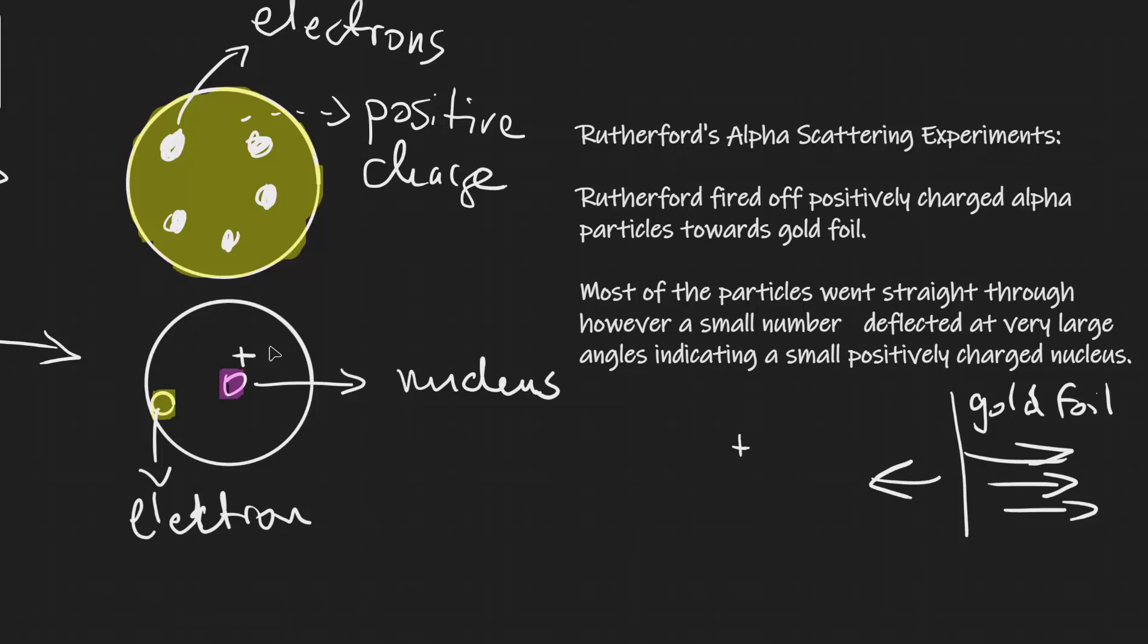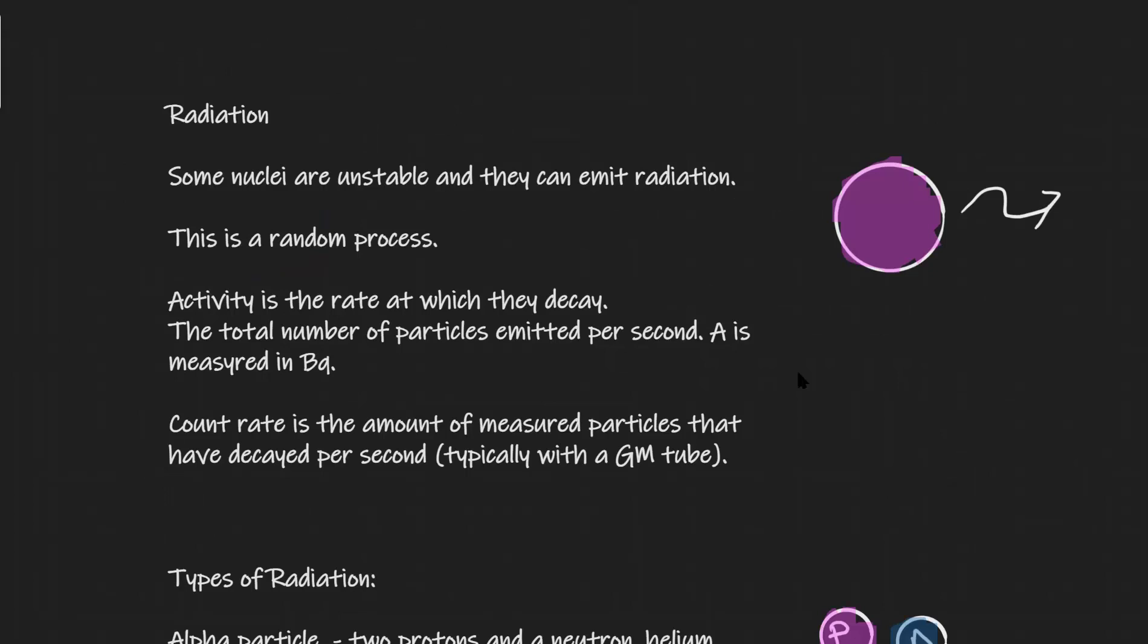Now let's talk about radiation. So some nuclei are actually unstable and what happens is that they can emit radiation. This is a completely random process. Random means that we cannot actually force it. We cannot just produce radiation. We describe it using a quantity which is known as the activity, which is the rate at which those nuclei decay.